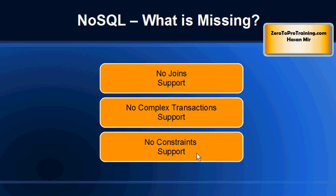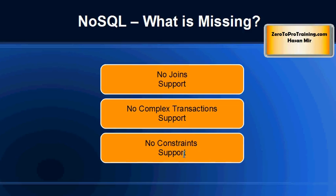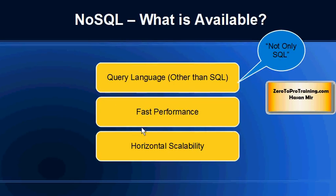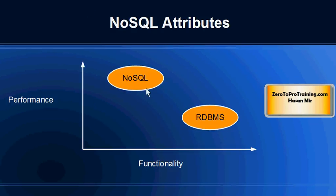Transaction support and constraint support have to be implemented at the application level. For example, you cannot say this is a null column and the value in this column has to equal the sum of the other two values. Constraints are not implemented at the database level. Those limitations exist because the focus is to provide performance and scalability. Although SQL language is not there, sometimes other languages are provided to perform queries with the database. That is why some authors translate NoSQL as 'not only SQL,' emphasizing that although SQL is not there, other query languages are. NoSQL databases provide very low functionality but very high performance, while relational databases provide lower performance but far more functionality.